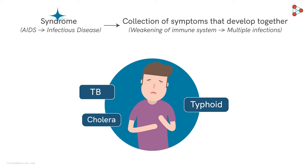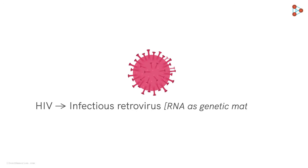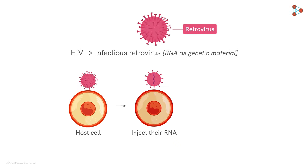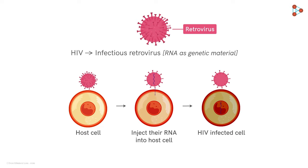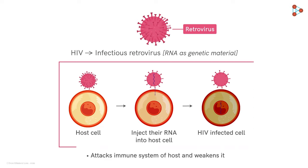In this video, let's learn about this syndrome, which is an infectious disease, in detail. HIV is an infectious retrovirus. Viruses are classified mainly on the basis of their genetic material, and those viruses which have RNA as their genetic material are called retroviruses. These viruses insert their genetic material into the host cell to cause an infection. Post-infection, the major task of this virus is to attack the immune system of the host and weaken it — a strategy used by HIV to conquer the host's body completely.